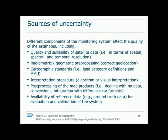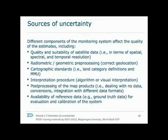Many components of a monitoring system affect the quality of the estimates and could lead to higher or lower uncertainties. Some of these are based on decisions from the reporting agencies, such as minimum mapping unit and land cover category definition. Some are based on technical limitations in data acquisition, and some can be improved through expansion of the monitoring system and the inclusion of higher quality reference data or remote sensing data for analysis.